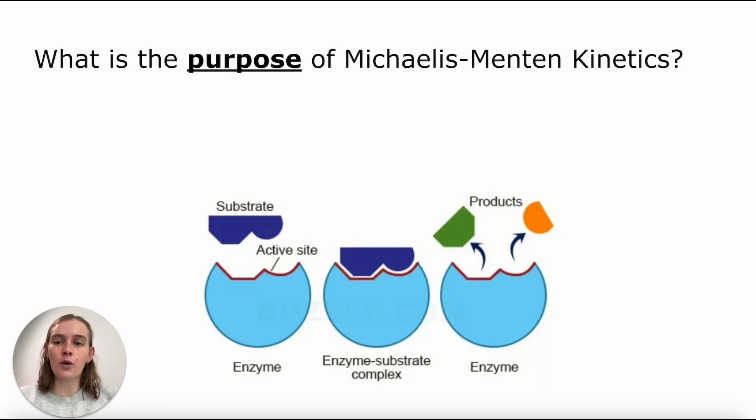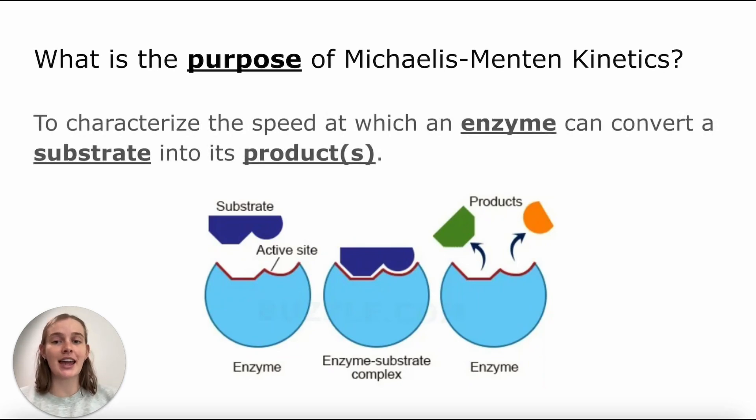So first, we want to think about what is the purpose of Michaelis-Menten Kinetics? Why do we need to know it? And what is it telling us? Essentially, Michaelis-Menten Kinetics is a way of characterizing how quickly an enzyme can convert its substrate into its product or products. The substrate, of course, being the molecule that binds the enzyme's active site, and the product or products being what is generated once the reaction takes place.